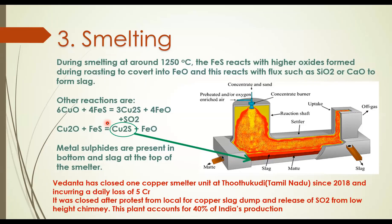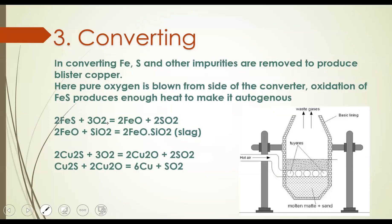The next process is converting. From the previous process we get Cu2S as matte. To convert this matte to pure copper, we purge hot air — pure oxygen — from the sideways into the converter chamber. The oxygen reacts with Cu2S to produce Cu2O, and this Cu2O again reacts with Cu2S to produce pure copper. This copper is called blister copper. Notably, this is an autogenous reaction — a self-reduction reaction — meaning no extra energy needs to be added.